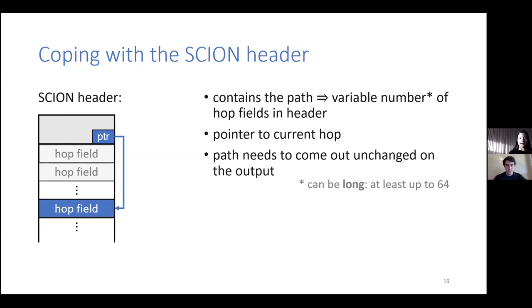So the message here is that we can mix and match as we need. We can do the parts which make sense in P4, and then we can provide optimized native things for the tight parts of the code. Another interesting part here was coping with the SCION header. So this is a non-trivial problem because the SCION header, as I already mentioned, contains the path. And this is a variable number of hop fields in the header. And there is a pointer to the current hop. And we need to output this path unchanged in the deparser. So there are some obvious things we can try, right? So in P4, we have header stacks.